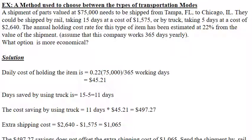Next, calculate the number of days saved by using truck. Rail takes 15 days and truck takes 5 days, so 15 minus 5 equals 10 days saved by using the truck.